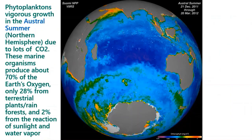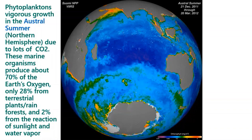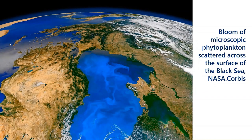The reason phytoplanktons are supporting life by producing 70% of our oxygen is simply their numbers — there are too many of them. You can see them spread across the Antarctic continent, Australia, and the tip of Africa. Not only in the south: there are also plenty in the north, called boreal. The areas shown in green or blue represent phytoplanktons. Even the Black Sea produces a lot of oxygen because of abundant phytoplanktons there.